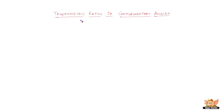In this video, let us look into the topic called trigonometric ratios of complementary angles. Complementary angles are nothing but two angles that sum up to 90 degrees — if a pair of angles sums up to 90 degrees, those angles are called complementary angles.